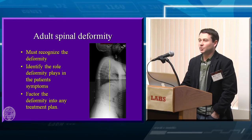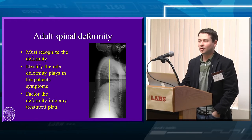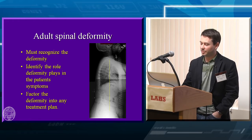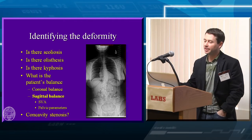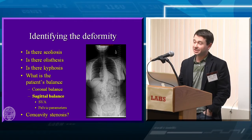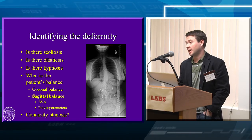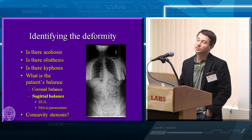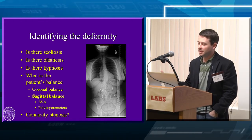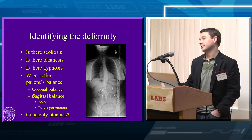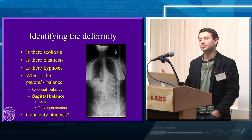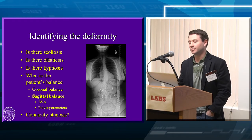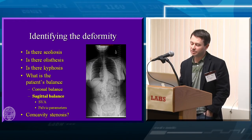When you have an adult deformity, you have to recognize the deformity, figure out if this is their problem, what role it plays, and then factor that into your treatment plans. I always think about identifying that deformity: Is there a scoliosis? Is there a listhesis? How does that factor into correction? Is there a sagittal plane issue, a lateral listhesis, kyphosis — and is it normal or abnormal? Coronal balance is obviously important, but sagittal balance is really what we're focusing on today.